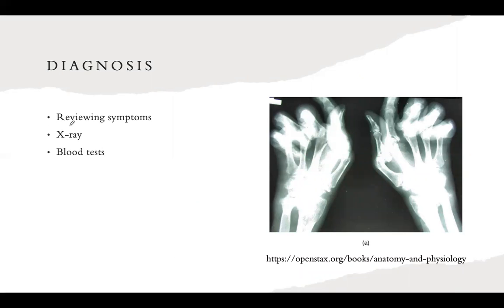For diagnosis, a doctor will review the symptoms and then decide if an x-ray or blood test is necessary. An x-ray can reveal deforming bones and joints in progressive cases. A blood test looks for elevated proteins indicating an inflammatory and immune response, and can also detect rheumatoid factor, which is an autoantibody that indicates the person has rheumatoid arthritis.